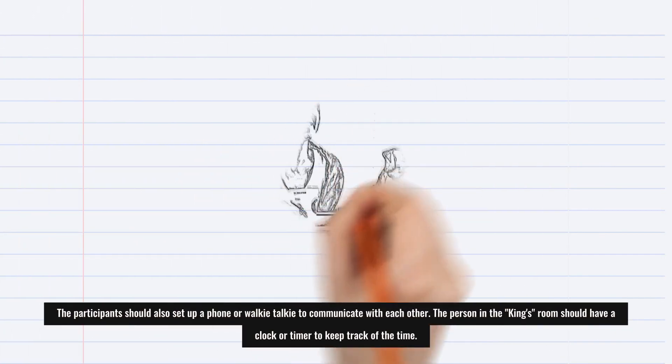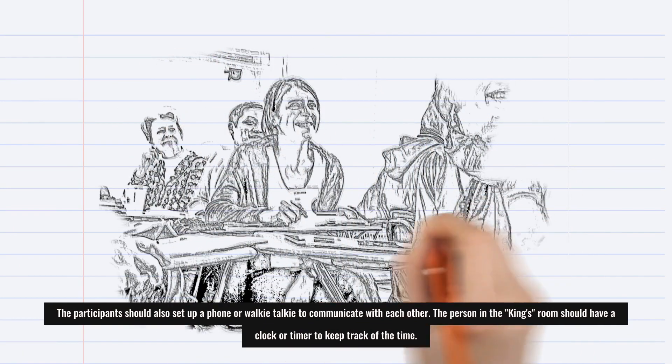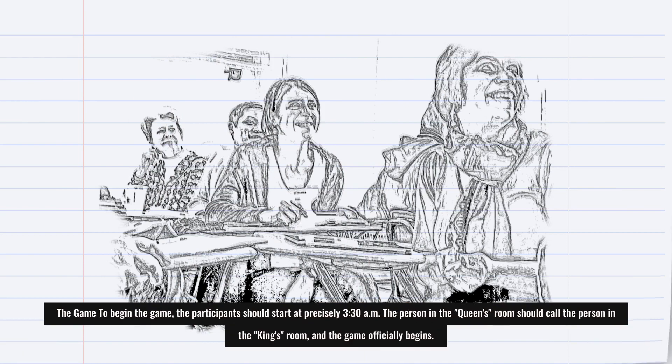The participants should also set up a phone or walkie-talkie to communicate with each other. The person in the king's room should have a clock or timer to keep track of the time.